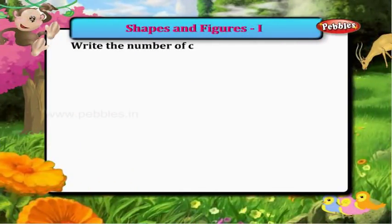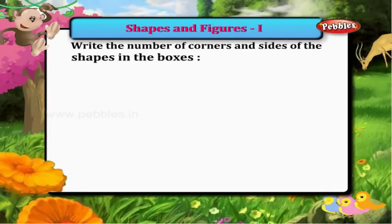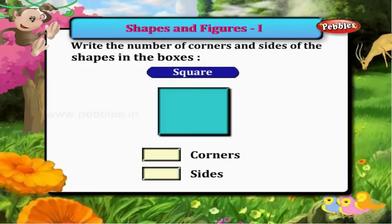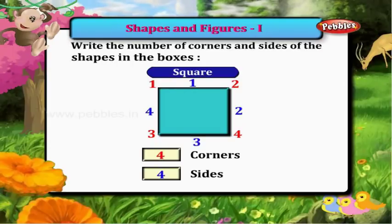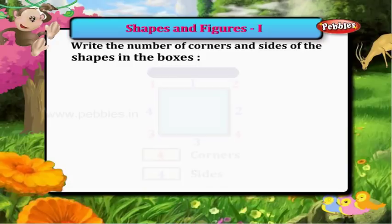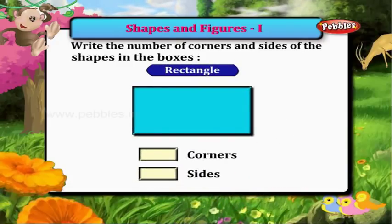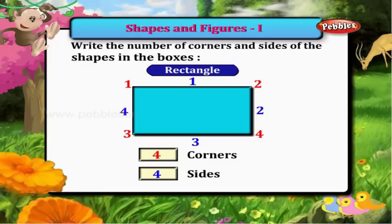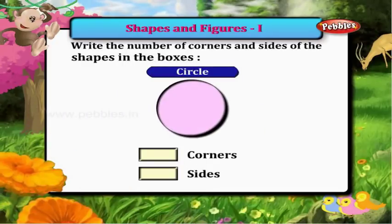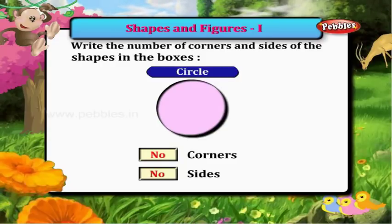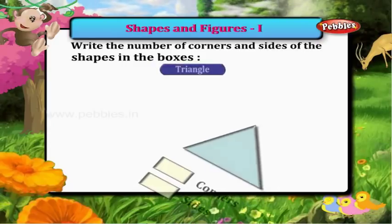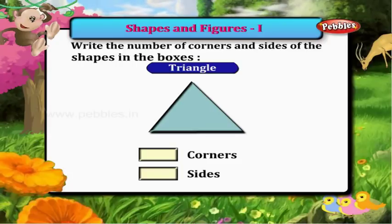Write the number of corners and sides of the shapes in the boxes. This is a square — it has four corners and four sides. This is a rectangle — it has four corners and four sides. This is a circle — it has no corners and no sides. A triangle has three sides.